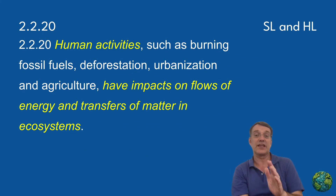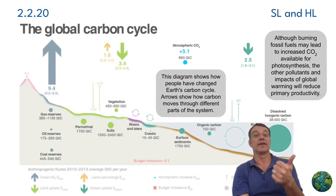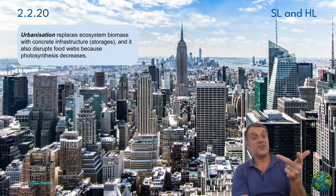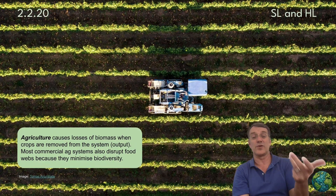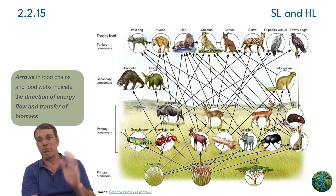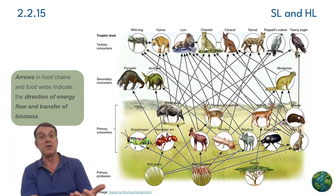Human activities significantly impact the flows of energy and matter in ecosystems. Burning fossil fuels releases stored carbon and pollutants that can affect primary productivity. Deforestation can remove huge amounts of biomass and disrupt photosynthesis. Urbanization replaces natural ecosystems with built infrastructure. And modern agriculture frequently creates simplified systems with only a few species, which reduces biodiversity. All these changes alter the complex networks of energy flow that have evolved in natural ecosystems over many millions of years.